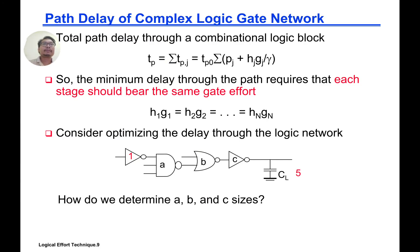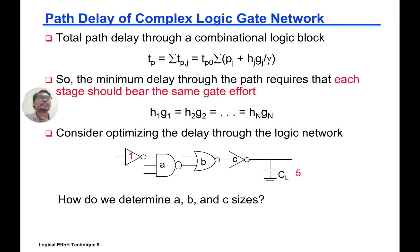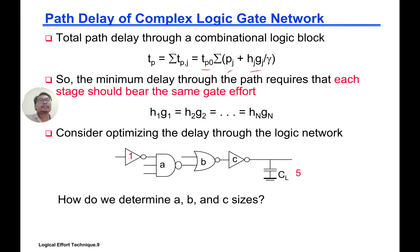We can extend this to look at the path delay of complex logic gate networks. The total path delay through a combinational logic block is given by TP0 times the sum of (P plus HG). To obtain minimum delay, each stage should bear the same gate effort, so H1·G1 equals H2·G2, and so on through stage N.